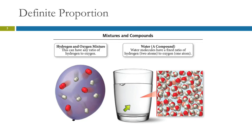Whereas in water, which is a compound, the proportion of hydrogen to oxygen is always the same, because each little particle contains two hydrogen atoms, one oxygen atom.